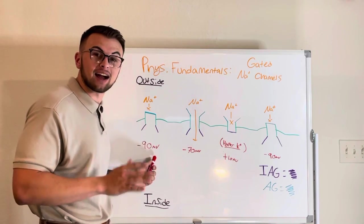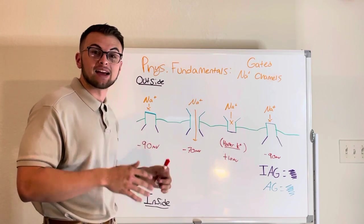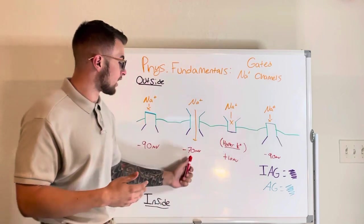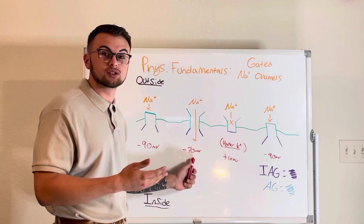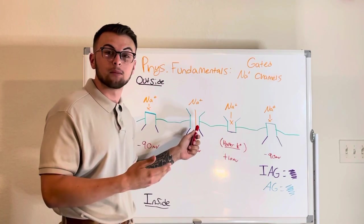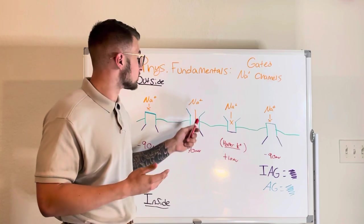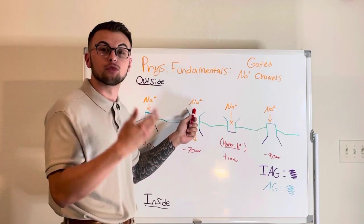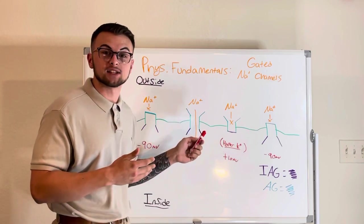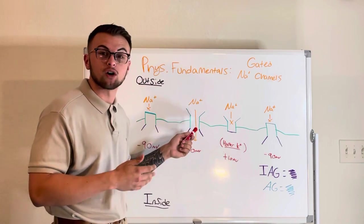As soon as the cell becomes more positive, at around negative 70 millivolts, the AG brother realizes he must do his job and opens his gate so that the sodium can come through. This makes our cell even more positive as the positive sodium ions come in.